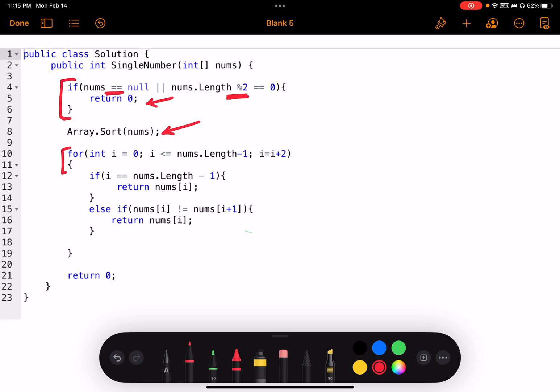Then starting a for loop with i is equal to zero, all the way to i less than or equal to nums.length minus one, and incrementing i by two after each iteration.